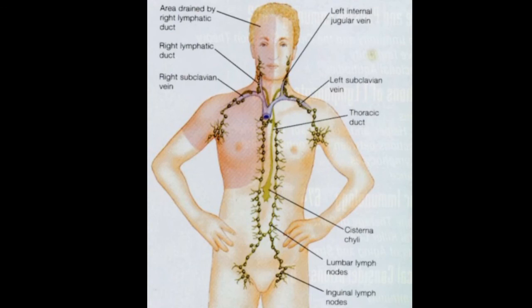You can see the inguinal lymph nodes. They go to the lumbar lymph nodes. And it goes to the cisterna chile. And then we've got the thoracic duct, which goes to the left venous angle between the left internal jugular vein and the left subclavian vein. Then from the... You see the red bit. That's the area drained by the right lymphatic duct, which goes to the right subclavian vein. So that's the right venous angle.